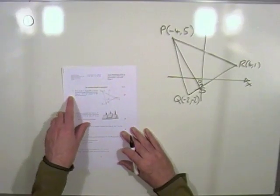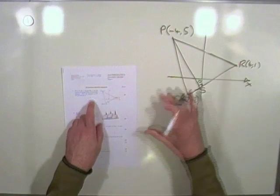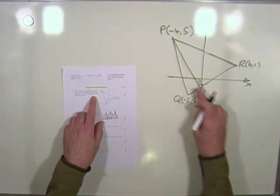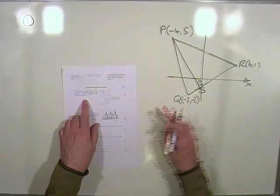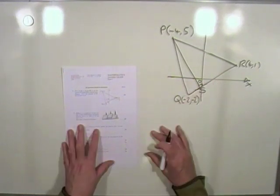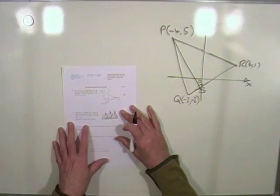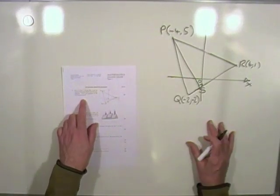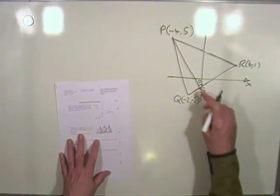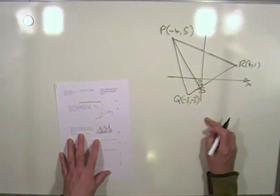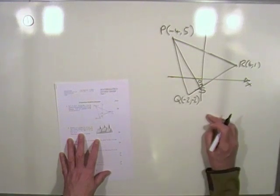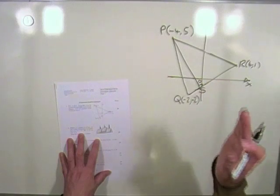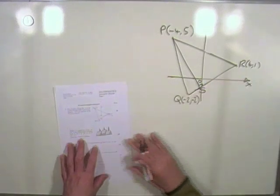Question one. You're given three points and the diagram to help you visualize it. Find the equation of PS which is the altitude, which it also points out is a right angle, so it's made it very easy for you. It could have just given you those three points and said find the altitude from P and you'd have to figure out the rest yourself, remembering which was the altitude, which was the median, and which was the perpendicular bisector. The altitude is the distance straight up and down so it's the one that hits at right angles.